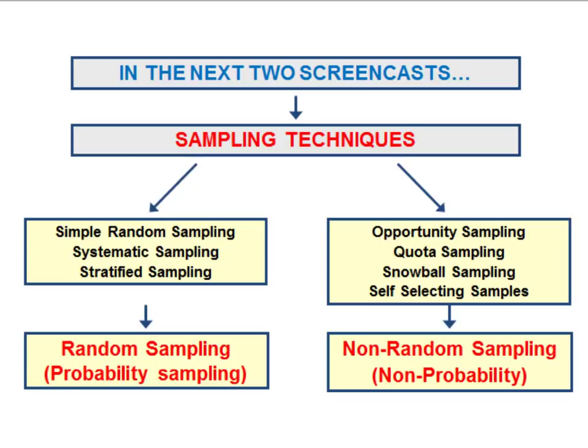Now in this first screencast on sampling techniques, we're going to focus on some of the main examples of random sampling — sampling techniques that try to ensure that every member of the target population has the same chance or probability of being included in your sample.